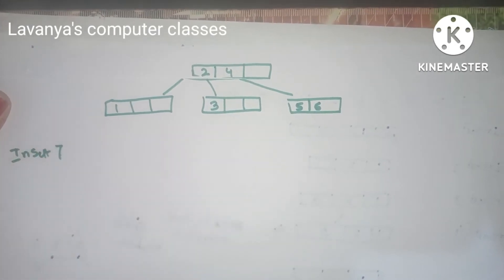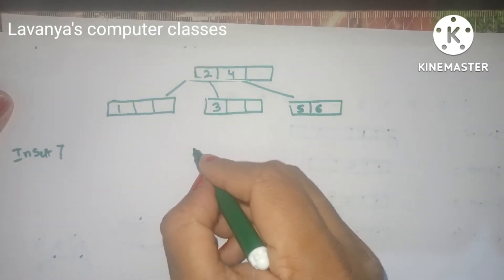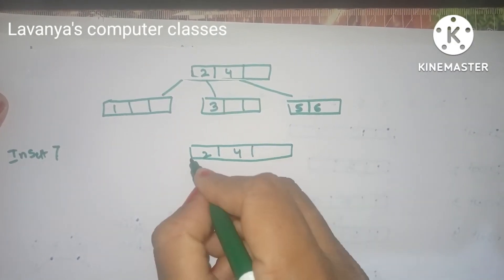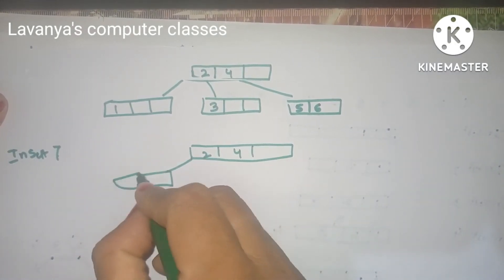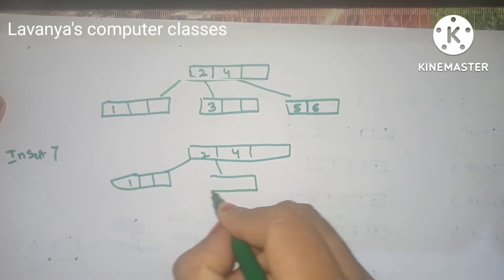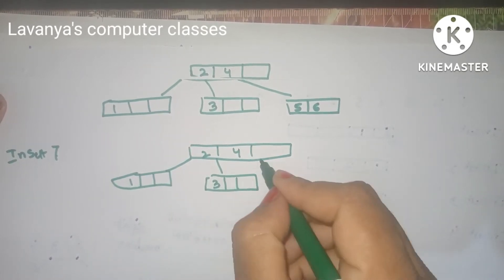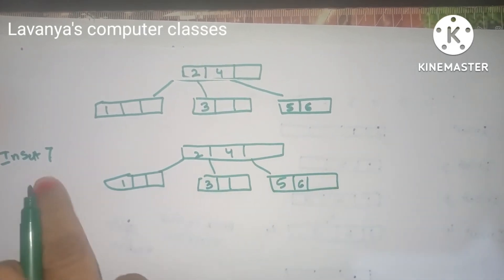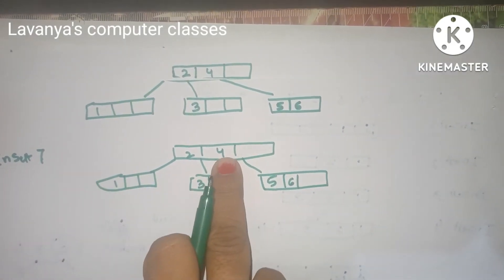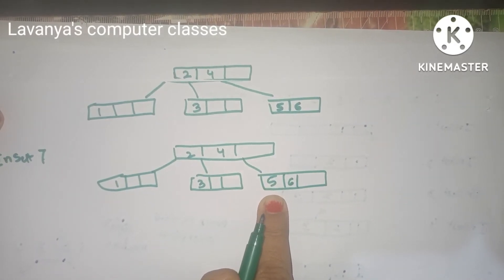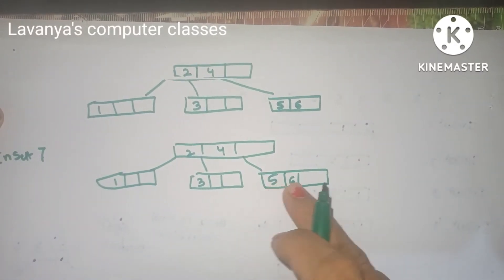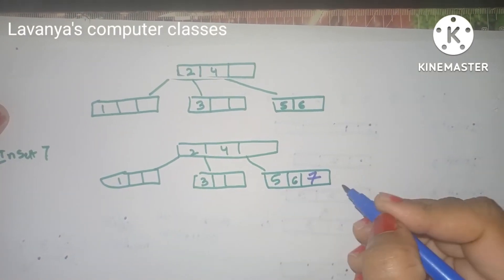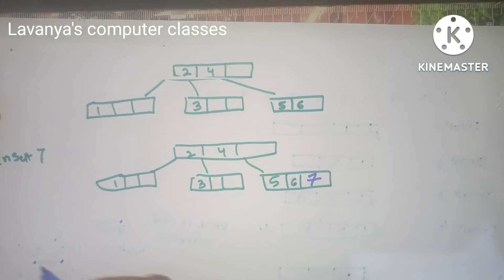Insert 7. The current tree has root 2 and 4. Left of 2 has 1. Between 2 and 4 has 3. Right of 4 has 5 and 6. Since 7 is greater than 4, go to the right of 4. The right node has 5 and 6 with one empty space. Without any problem, insert 7 there.